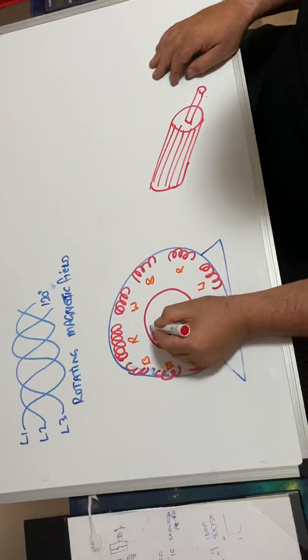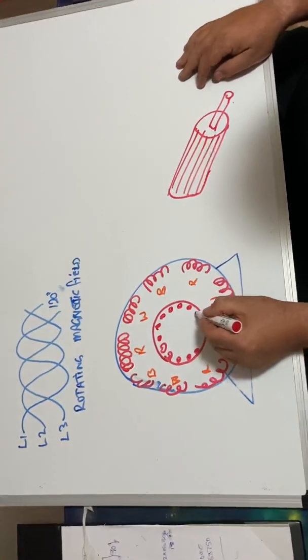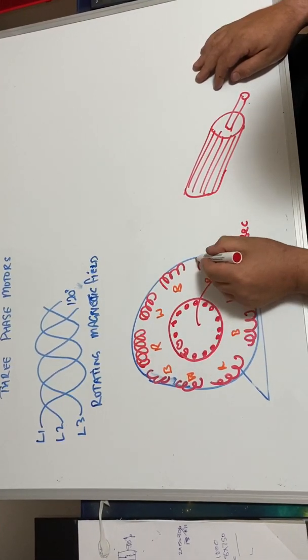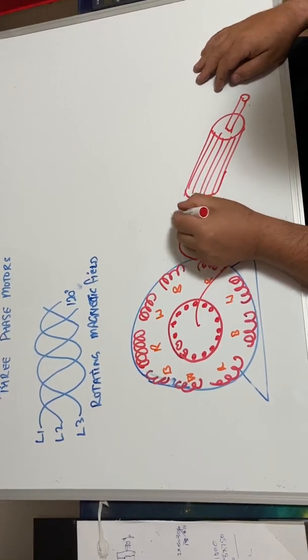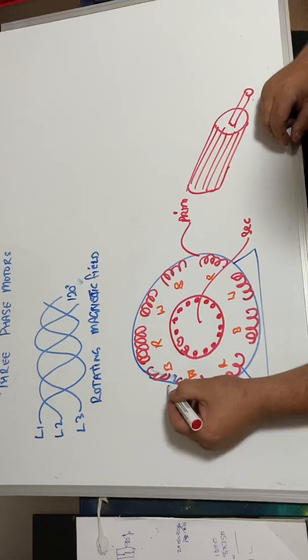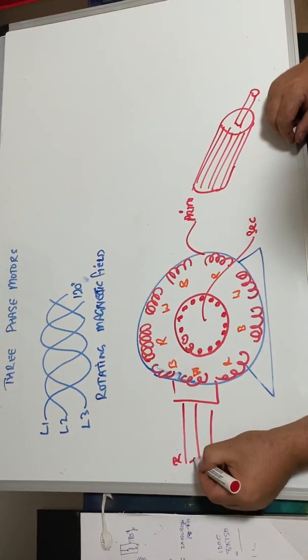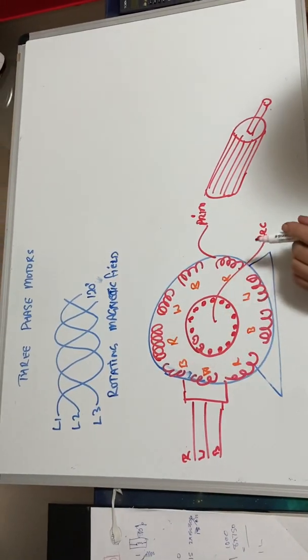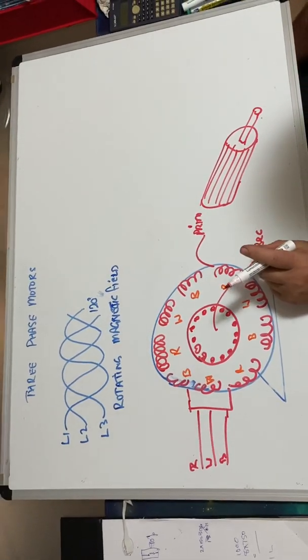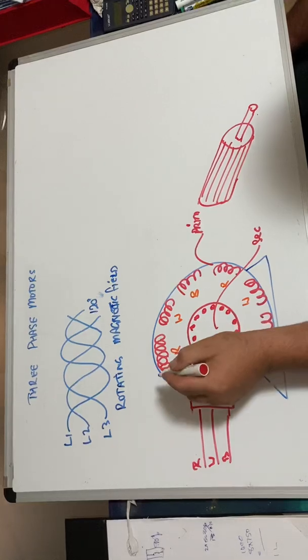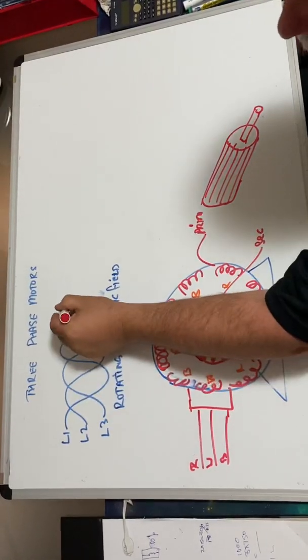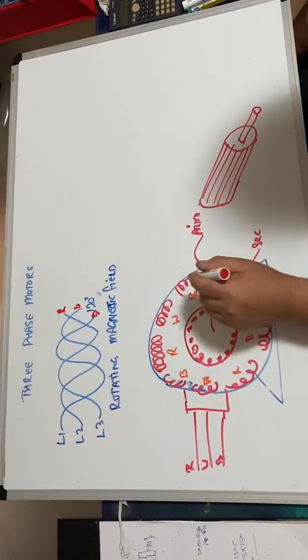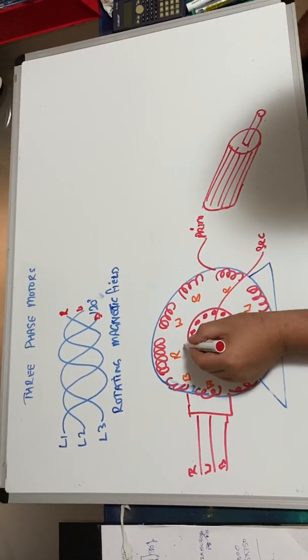These rods have a magnetic field induced into them, so we call this the secondary. This part's the primary. The primary is where our three phases come from - red, white, blue - at 120 degrees. As we induce a current or voltage onto these, we create a rotating magnetic field because this starts rotating around.